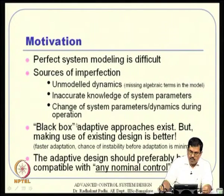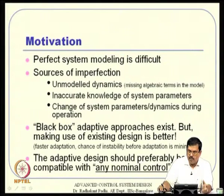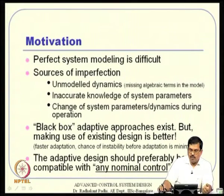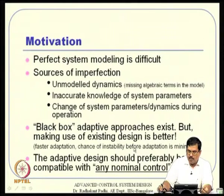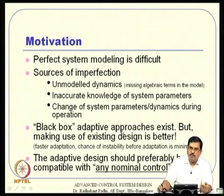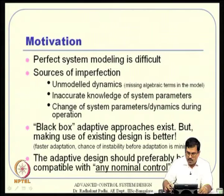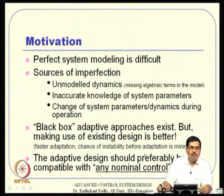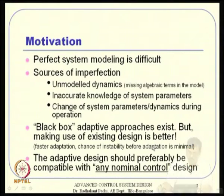What we really want is partial gray box approaches: whatever information is known to us we will take that, and whatever is not known we will try to identify. That way it will lead to faster adaptation and the chance of instability before adaptation is minimal. The nominal control will have some robustness based on the nominal model, and we are interested in improving its robustness as we go along by identifying the unknown part and using it to update the controller.